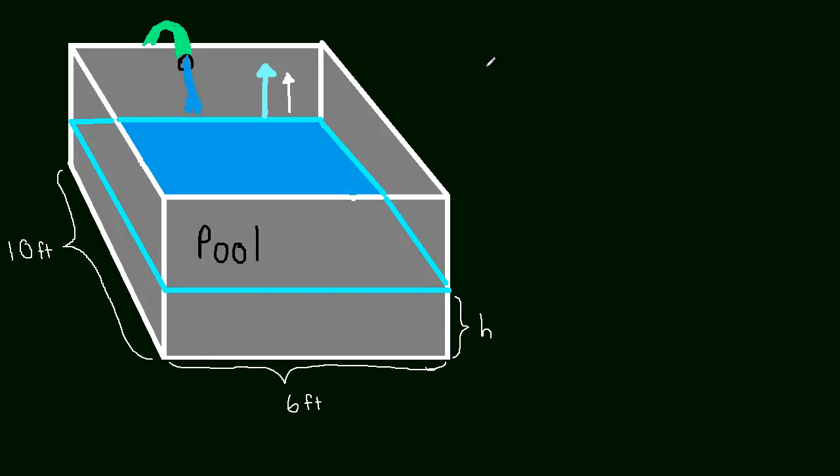But in this case, for the pool, we're trying to find the relationship of the rate of water from the hose. And we're trying to find a relationship between that and the rate at which the water rises. The rate at which the water rises. Sorry about my messy handwriting.